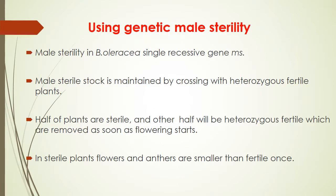Next is using genetic male sterility. Male sterility in Brassica oleracea is controlled by a single recessive gene MS. Male-sterile stock is maintained by crossing with heterozygous fertile plants. Half of plants are sterile and the other half will be heterozygous fertile, which are removed as soon as flowering starts. In sterile plants, flowers and anthers are smaller than fertile ones.